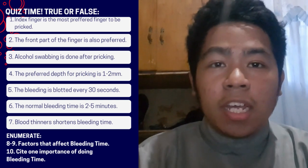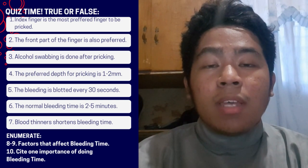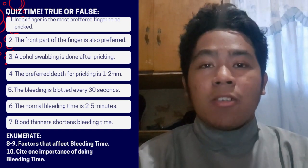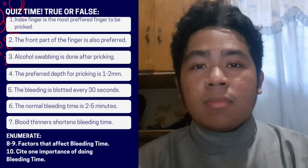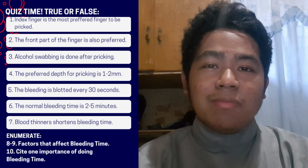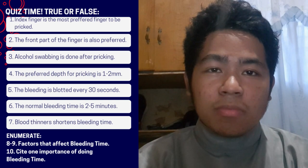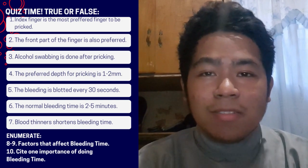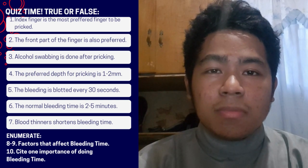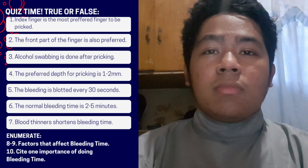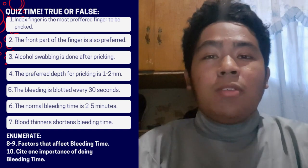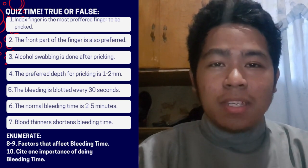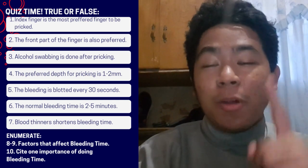For numbers eight to nine, can you list some factors that affect bleeding time? Only two factors. For number ten, please cite one importance of doing bleeding time.